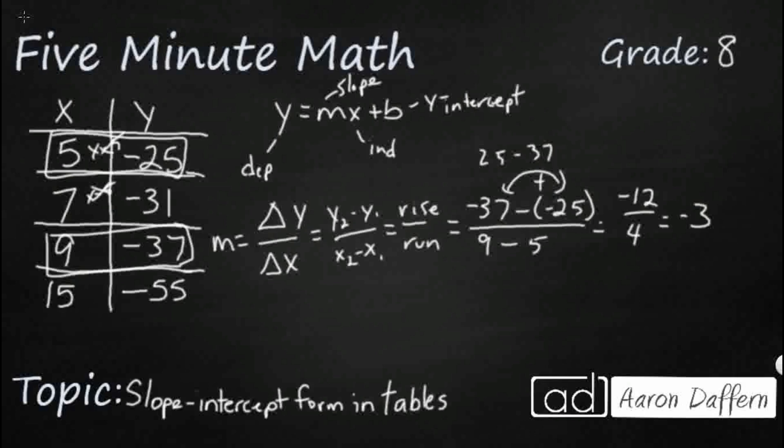All right, so my m equals negative 3, so it's going to be y equals negative 3x. But then we get this y-intercept here, and so let's just plug that negative 3x into some of these things. Look at this. So I'm going to say, let's use this first one right here.